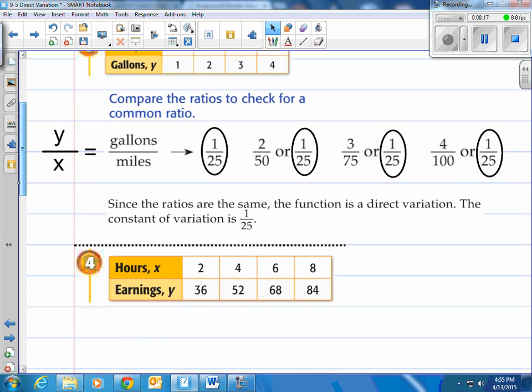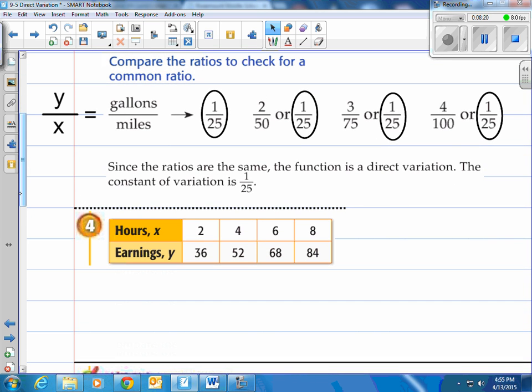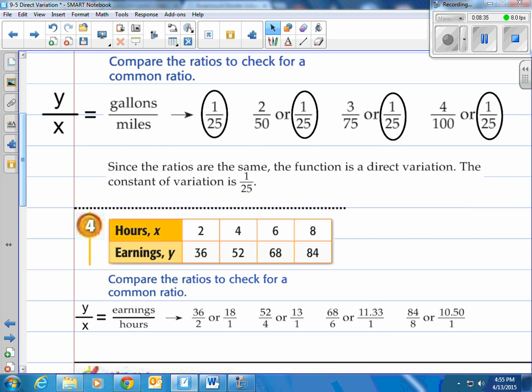Alright, take a look at this one. Same thing we have hours and earnings. How much money you make after so many hours worked. So what do we do first? Again compare the ratios to check for a common ratio. Again y over x is what we're looking for. So we take y divided by x. Take your earnings divided by hours. How much you make per hour. And you'll see 36 over 2, that's 18 for one hour. And then we have 52 over 4, that's 13 over 1, which is 13 per hour. Then 68 over 6 was 11.33 per hour. And then 84 over 8 which is 10.50 per hour.